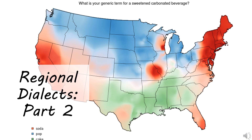Hello, and welcome to another lesson about language and social issues. This is the second lesson about the development of regional dialects of American English. If you haven't watched the first part, go back and watch that before watching this part.